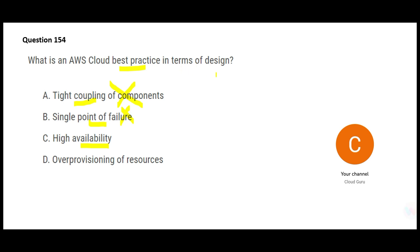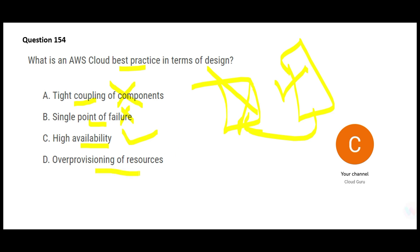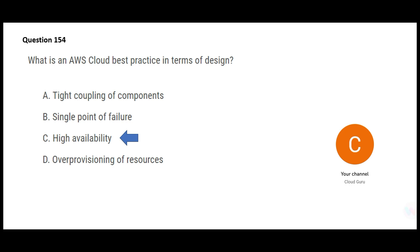High availability is a good design — you put your application on multiple AZs so if one goes down, the other is up. Over-provisioning of resources is not a best practice. For example, if you have two people and need a car, don't buy an SUV — that's over-provisioning; you'll pay more unnecessarily. If you need two EC2 instances and you provision ten, you pay for eight extra instances unnecessarily. So high availability is my final answer.